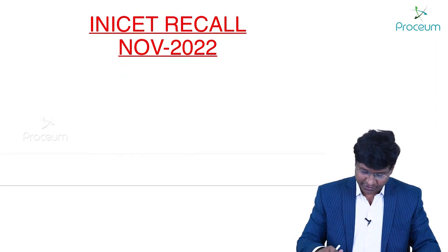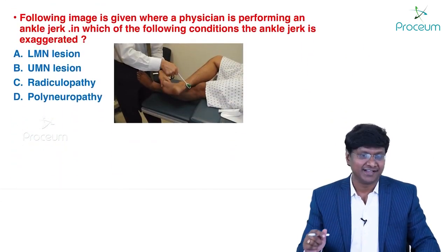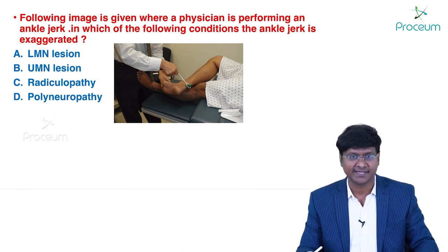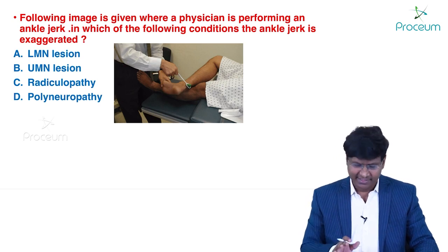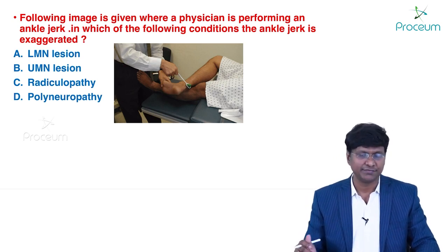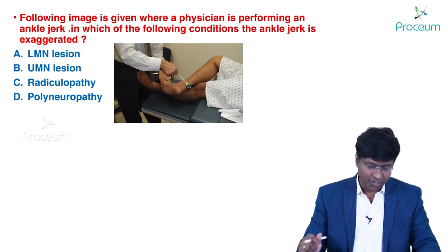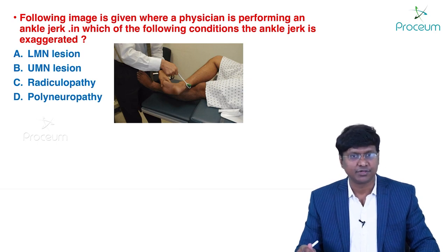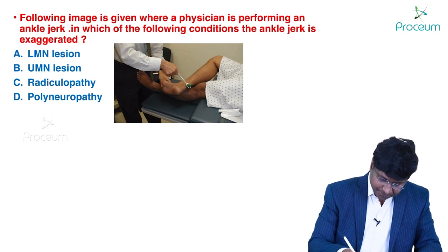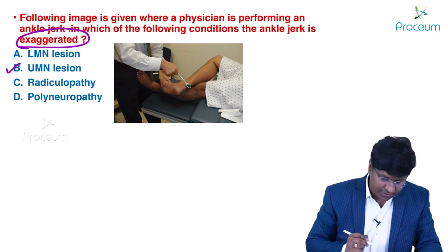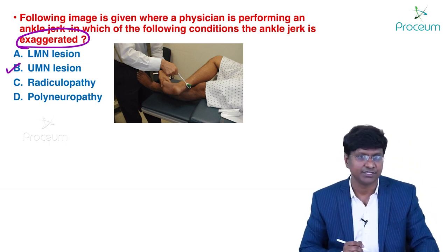The first question shows an image of a physician performing an ankle jerk. The question asks: in which condition is the ankle jerk exaggerated? The options are lower motor neuron lesion, upper motor neuron lesion, radiculopathy, and polyneuropathy. The answer is upper motor neuron lesion, where you have exaggerated reflexes.